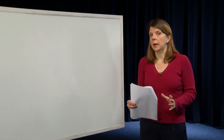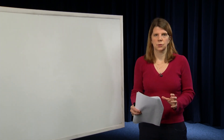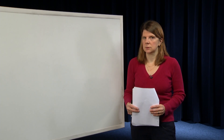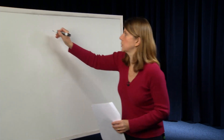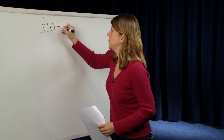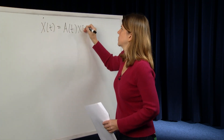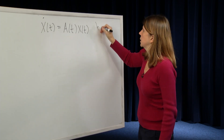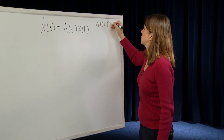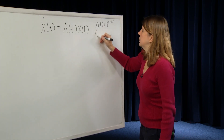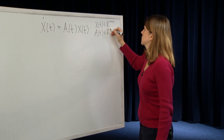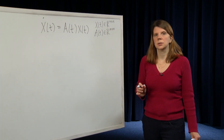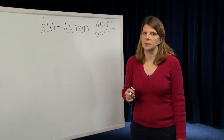Recalling from the last module, we presented the state transition matrix. The state transition matrix is given as the solution to the following matrix differential equation: x-dot of t is equal to A of t times x of t, where x of t is a matrix in R^(n×n), and A of t is our n-by-n matrix. The solution to that differential equation starting at the initial condition of the identity is defined as the state transition matrix.